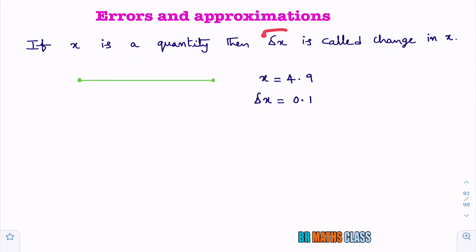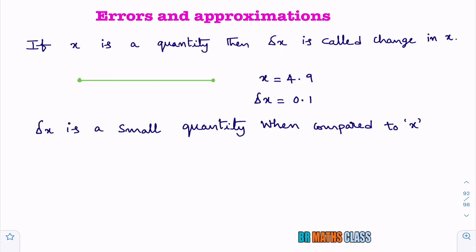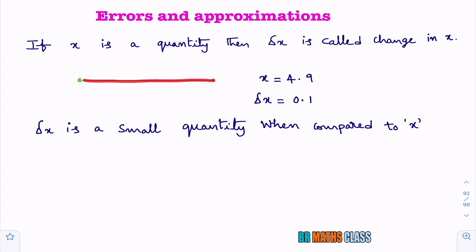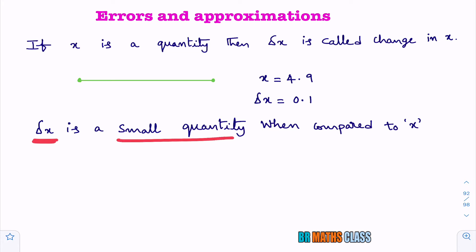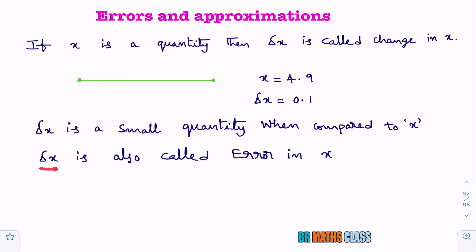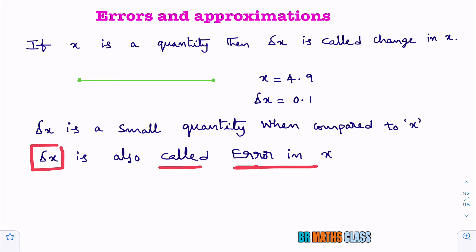Throughout this chapter, delta x means change in x. Delta x is also known as error in x. This is an important point: delta x is a small quantity when compared to x. Here, x is 5 centimeters and delta x is 0.1 — you can observe that delta x is very small when compared to x. Delta x is also called error in x.